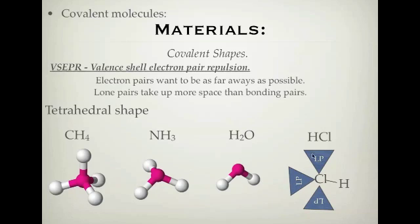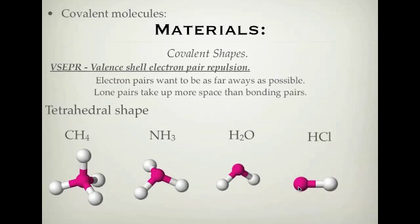If you have three lone pairs of electrons, these lone pairs want to be as far away from each other as possible, they take up a lot of space, and they give you a straight molecule. The straight molecule is known as a linear shape. So we have: tetrahedral, triangular pyramid, V or bent shape, and linear — all due to valence shell electron pair repulsion, because lone pairs take up more space and push bonding pairs away.